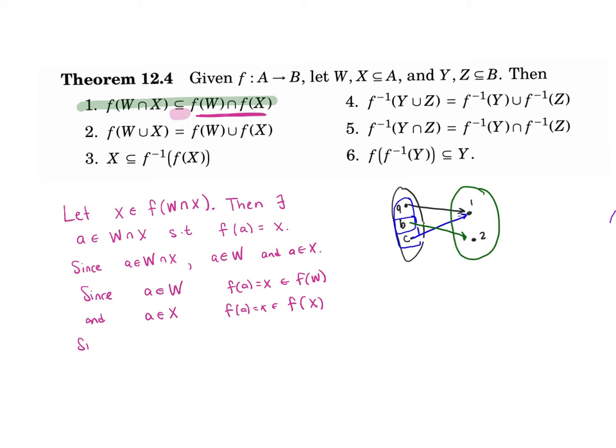And since a is in X, then f(a), which is that x, is in f(X). And now we get that x is in f(W) and x is in f(X). So x is in the intersection, which is what we wanted to show.